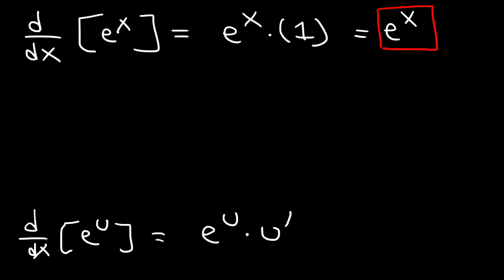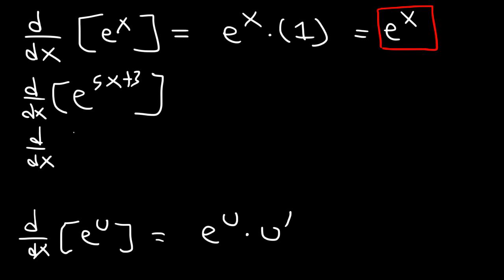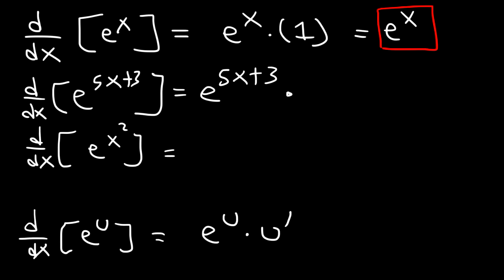Based on that example, go ahead and find the derivative of these expressions: e to the 5x plus 3, and e to the x squared. So first, we rewrite the expression e to the 5x plus 3, and then times the derivative of 5x plus 3, which is 5. So the answer is 5 times e raised to the 5x plus 3.